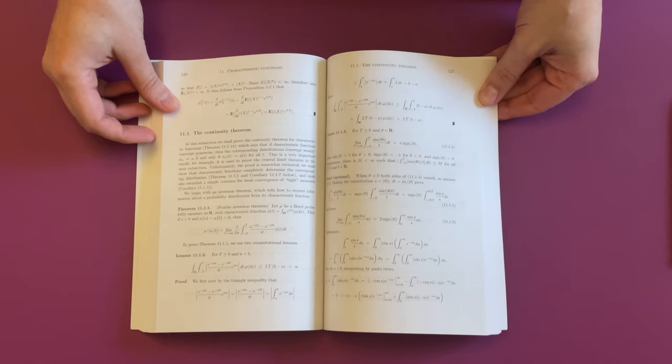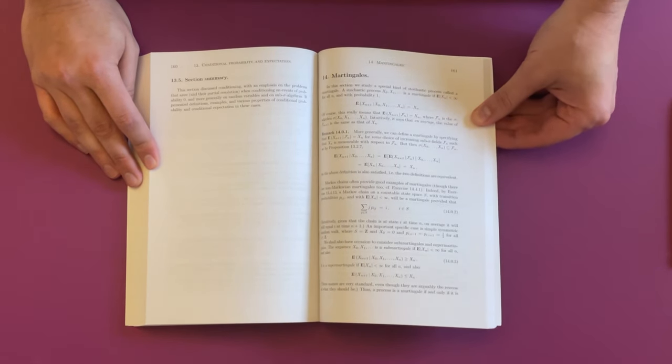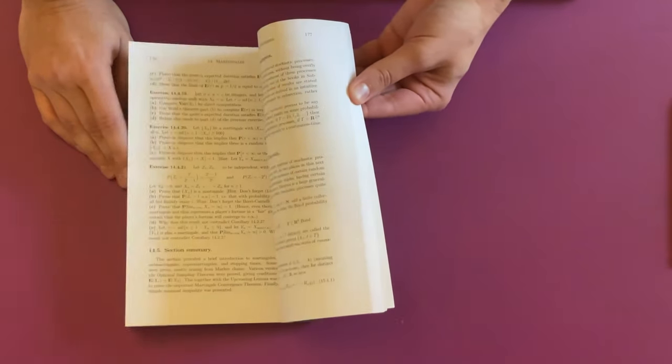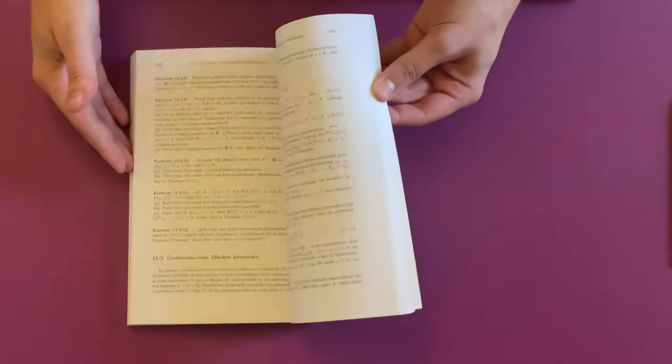This book also covers Martingales, and this is something I really wanted to become a little bit more familiar with. It's a subject I don't know too much about, and I know it's a big deal in theoretical probability or measure theory, so I was really happy to see it in this section. In fact, having a dedicated space for it was one of the main reasons I bought the book.